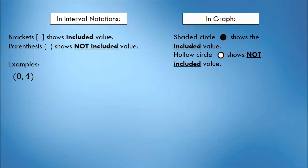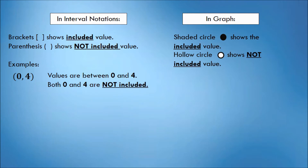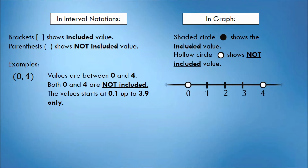For example, we have the interval (0, 4). This interval indicates that the values included are between 0 and 4, but both 0 and 4 are not included because of the parenthesis symbol. Meaning, the value starts at 0.1 up to 3.9 only. In the graph, we will put hollow circles on 0 and 4 because those values are not included. The solution set is from 0.1 up to 3.9 only.